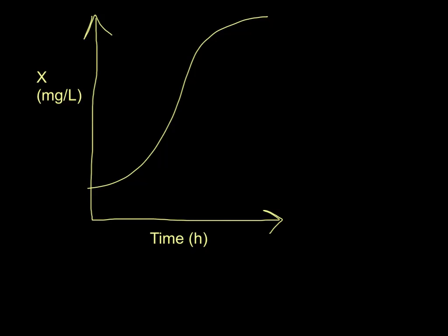So first of all, I've drawn a growth curve here, and you can see we've got on the y-axis here, we have got amount of biomass in milligrams per liter, and over here on the x-axis, we have got time, which is measured in hours, which is not always the case. You should be very careful to check the units of time when you're doing these kinds of calculations.